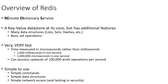Redis is a key-value data store but has additional features like data structures — lists, sets, hashes, ordered sets, and a couple of other things. Redis also allows basic set operations like union, intersection, and difference, but we don't get very much in the way of analytical functions beyond these basic set theory operators.